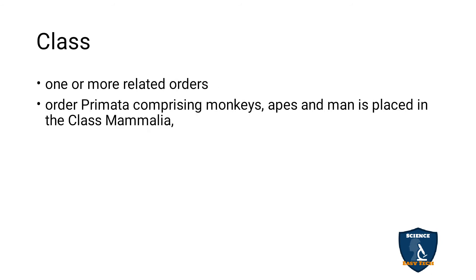Class is a level where one or more orders are kept together. For example, the order Primates — which includes monkeys, apes such as chimpanzees, and humans — are all kept under the class Mammalia, meaning milk-producing animals that feed their young ones.